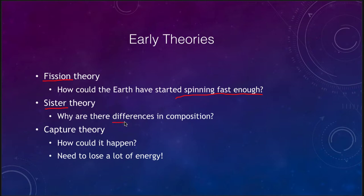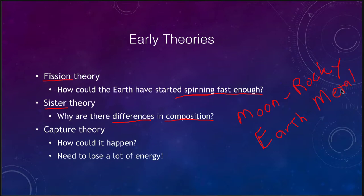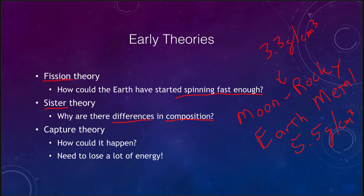Also, why are there differences in composition? The moon is rocky, while the Earth has more metal to it. If we look at densities, the moon's density is about 3.3 grams per cubic centimeter, and the Earth's is about 5.5 grams per cubic centimeter. There's a big difference in the densities, and you would think if they formed together, they would be essentially the same — the same proportions of rock and metal, because they formed at the same distance from the sun.